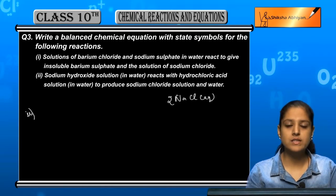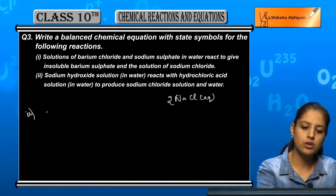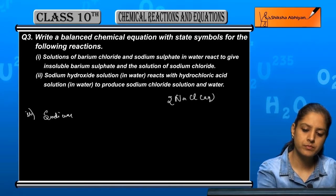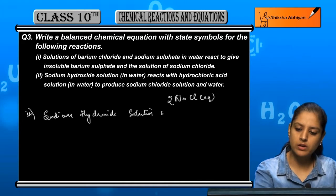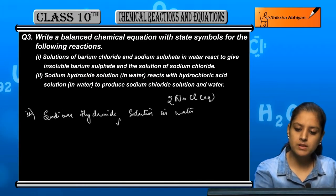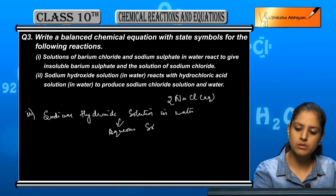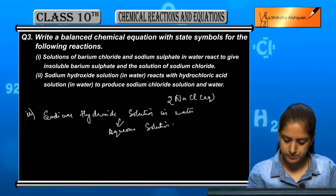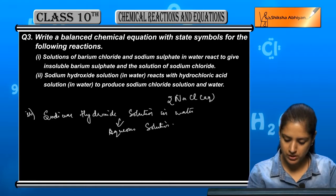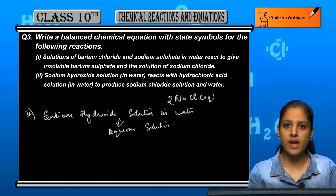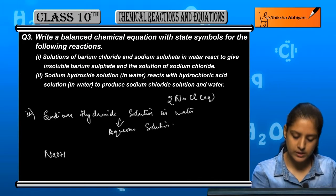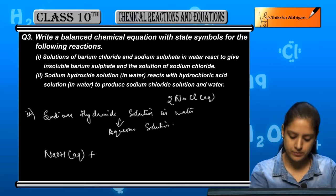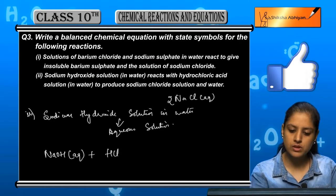Now the second equation: sodium hydroxide solution in water is an aqueous solution, and it reacts with hydrochloric acid solution in water, which is again an aqueous solution, to produce sodium chloride solution and water.